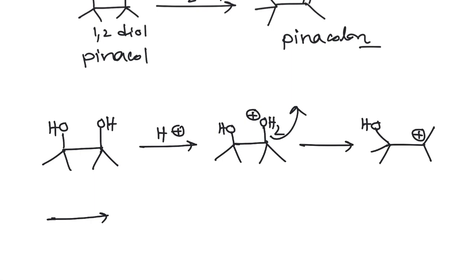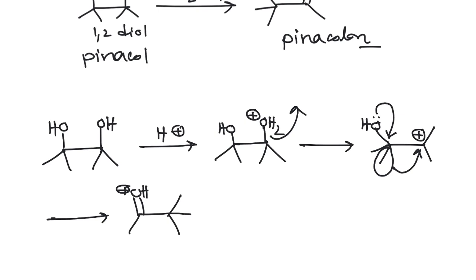How can it be rearranged? You can see this oxygen has a lone pair, so it can push its lone pair here, and by this electron push, this methyl group can be shifted towards the positive center. This is migration of an alkyl group towards a carbocation, which is very common. After proton liberation, you will get pinacolon. This is the basic mechanism of pinacol-pinacolon rearrangement.